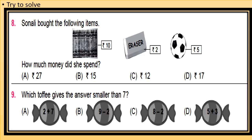Ninth is: which trophy gives the answer smaller than 7? Look at the options, solve the sums and subtraction given, and identify which answer is smaller than 7.